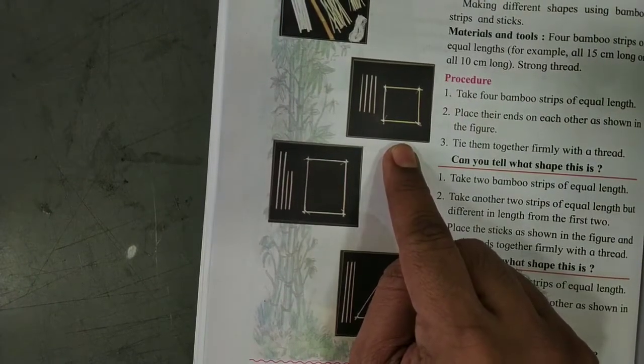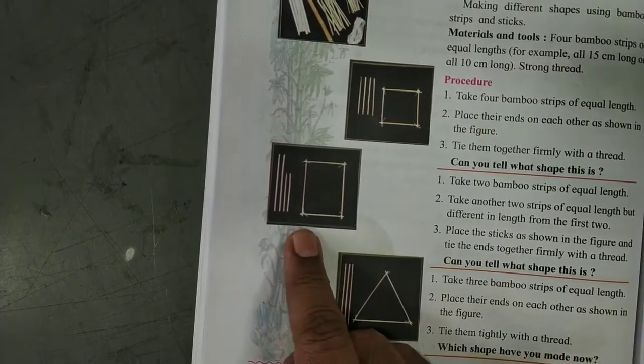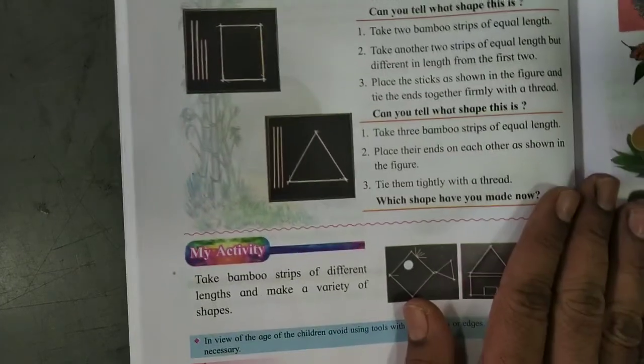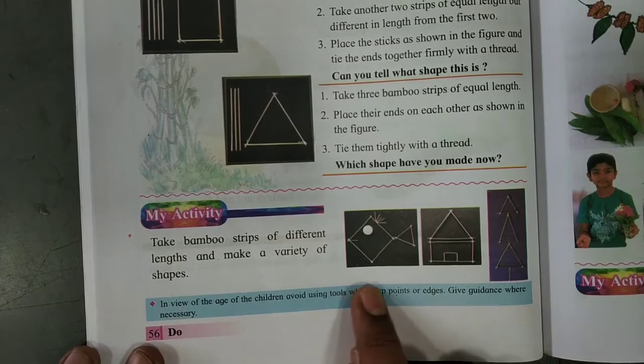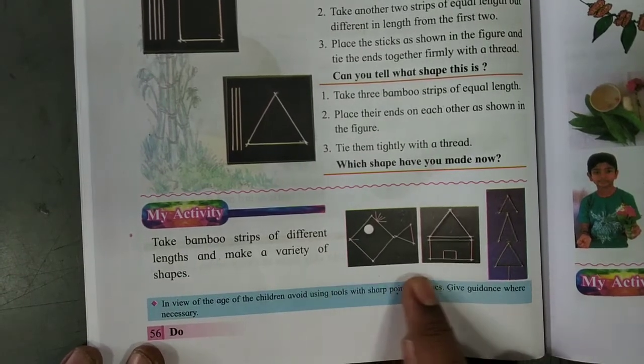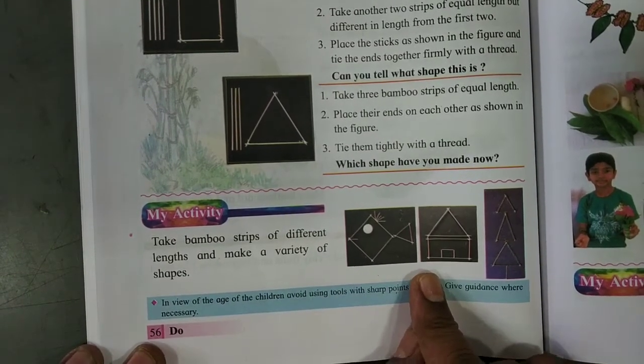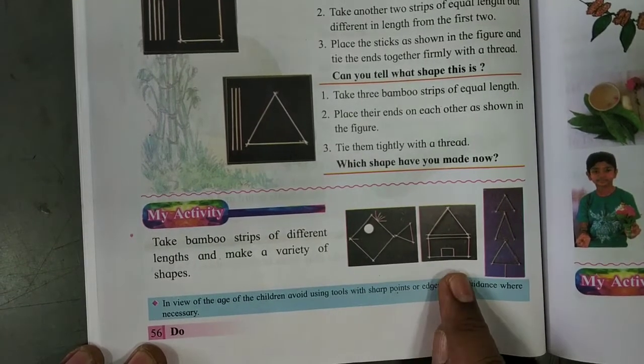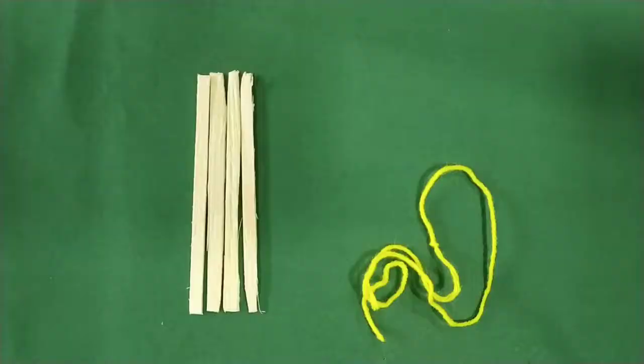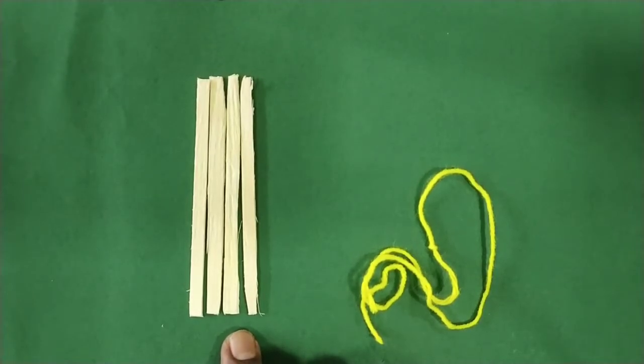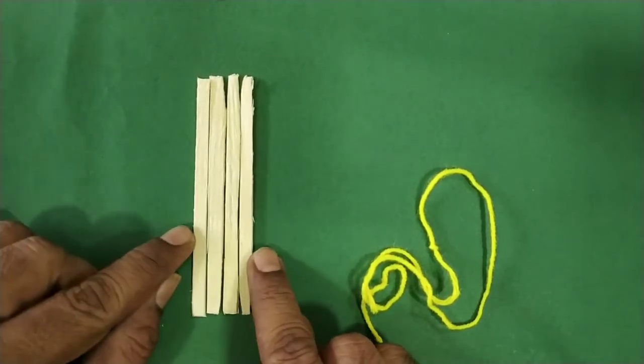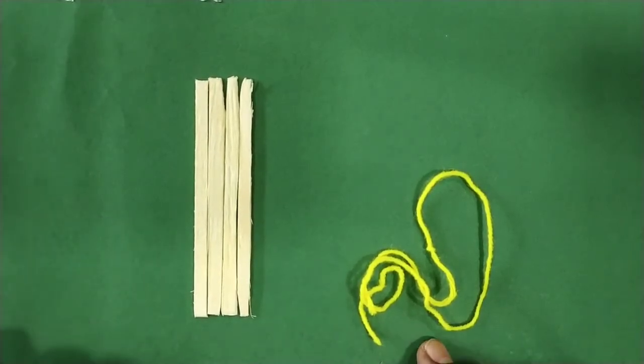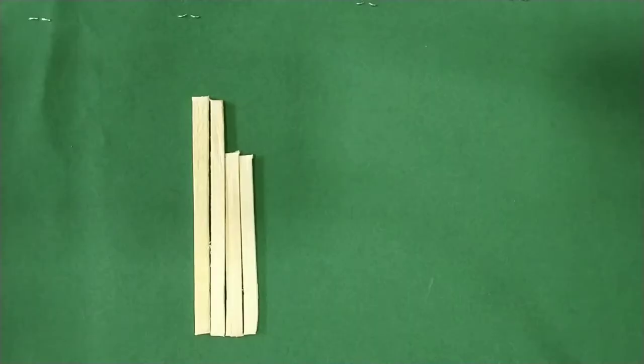How to make the square, rectangle, and triangle. After doing this one, you can take the bamboo strips of different lengths and make a variety of shapes. To make the square by using the sticks, all four sticks should be of same length, and take the thread.